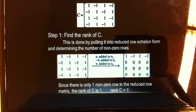Here we have the original matrix and it's shown in some steps as it's put into the reduced row echelon form. And here we can see that there's only one non-zero row in the reduced row matrix. Therefore, the rank of C is 1.